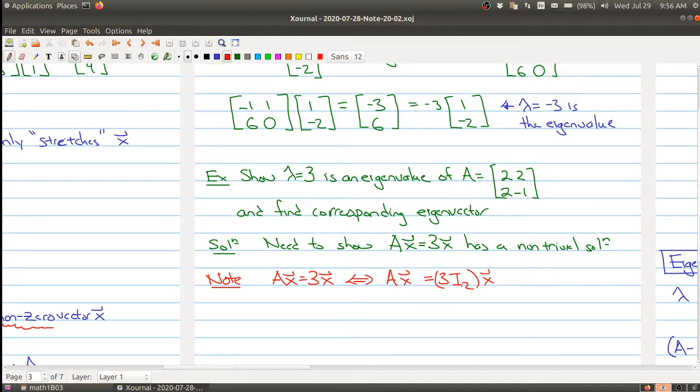This is good because now I have a matrix times x on both sides. So I can now rearrange this equation so that I have Ax minus 3I₂x equals to the zero vector.